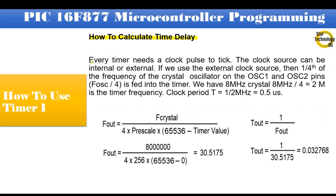How to calculate time delay? Every timer needs a clock pulse to tick. The clock source can be internal or external. If we use the external clock source, then 1/4 of the frequency of the crystal oscillator on the OSC1 and OSC2 pins, FOSC/4, is fed into the timer. We have 8 MHz crystal, 8 MHz / 4 = 2 MHz is the frequency. Clock period T = 1 / 2 MHz = 0.5 microsecond.